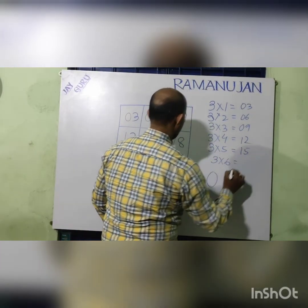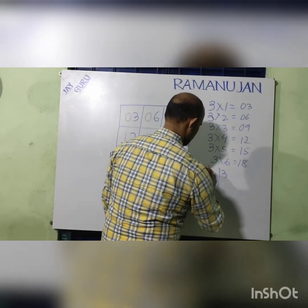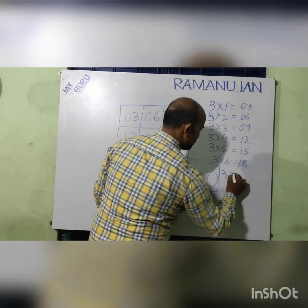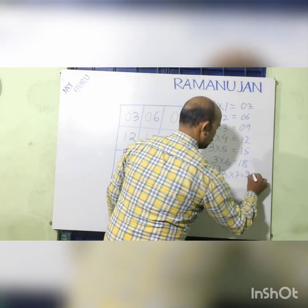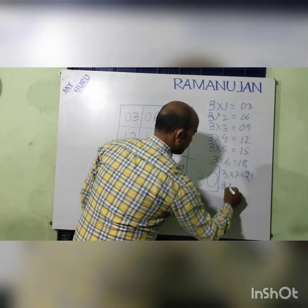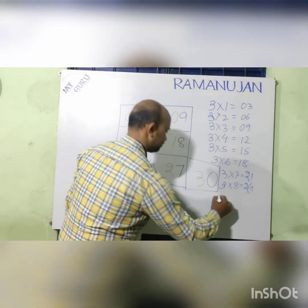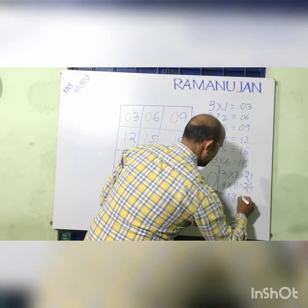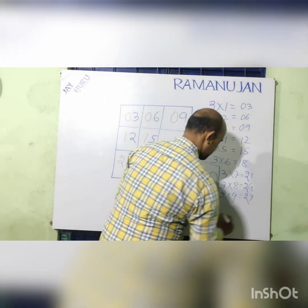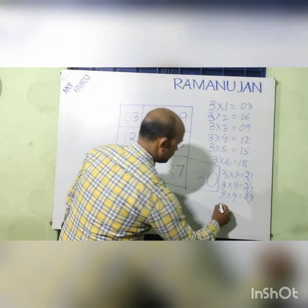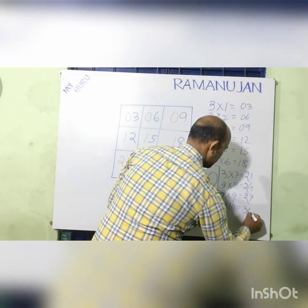3 times 6 is 18. 3 times 7 is 21. 3 times 8 is 24. 3 times 9 is 27. And in the last, 3 times 10 is equal to 30.